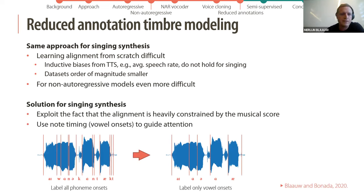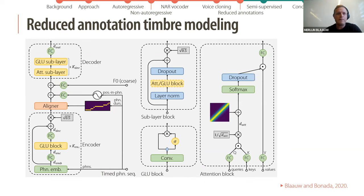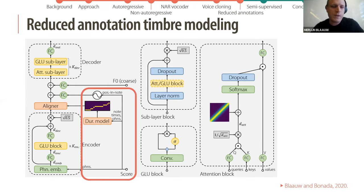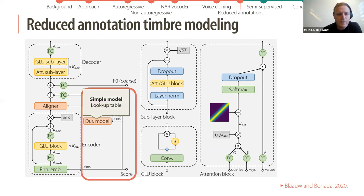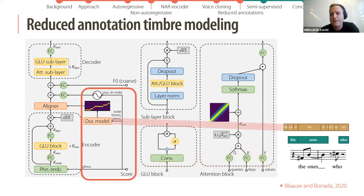Our solution for singing synthesis is to exploit the fact that the alignment is heavily constrained by the musical score. We use note timings or vowel onsets to guide the attention — instead of labeling all phoneme onsets, we label only the vowel onsets. We use the same non-autoregressive timbre model, but instead of inputting a timed phonetic sequence we input a score with lyrics, and a very simple duration model — a lookup table of average phoneme durations — predicts an initial phonetic timing estimate.